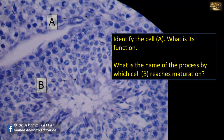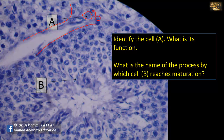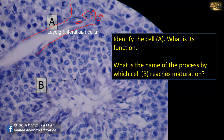Identify cell A and state its function. This is a section of the testis showing seminiferous tubules. In the interstitial space there is connective tissue with collagen fibers and fibroblasts, but in addition there are larger cells present in clumps with rounded nuclei and, in some specimens, foamy cytoplasm. These are interstitial cells of Leydig — Leydig cells — and their function is to produce testosterone.